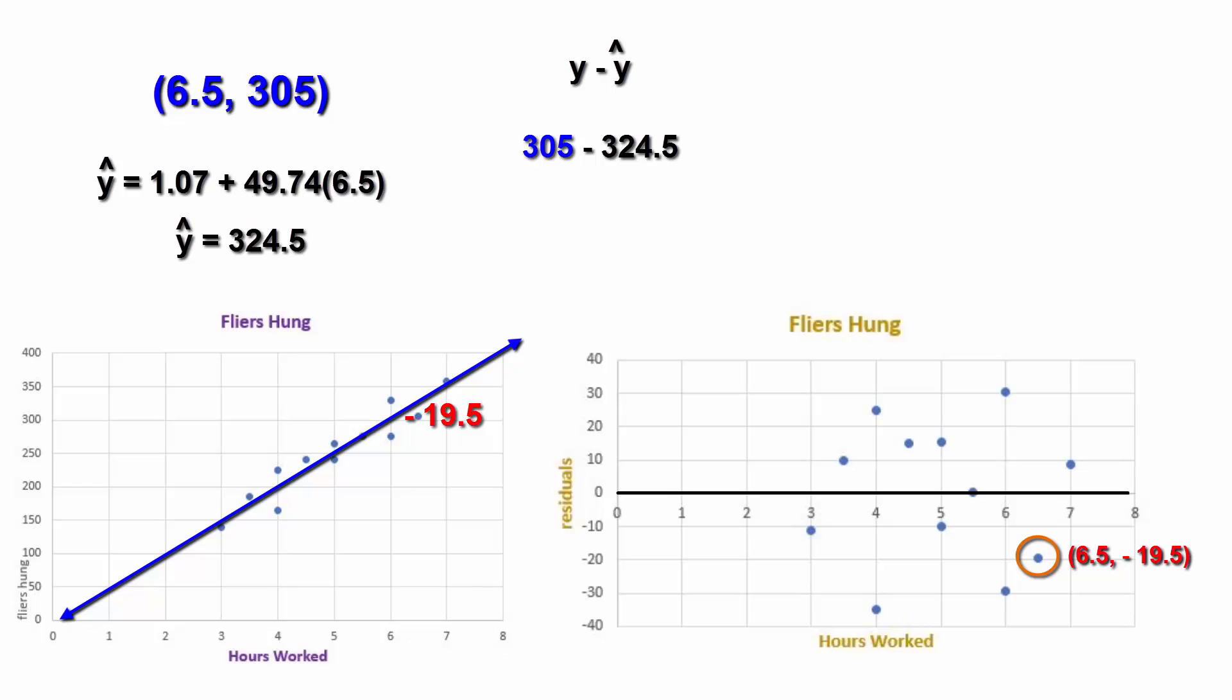Thus, the X is paired with the residual of Y. Notice the Y axis on the scatter plot. It is flyers hung. Hence, the ordered pair is 6.5 and 305, or 6.5 hours with 305 flyers hung. Now notice the Y axis on the residual plot.